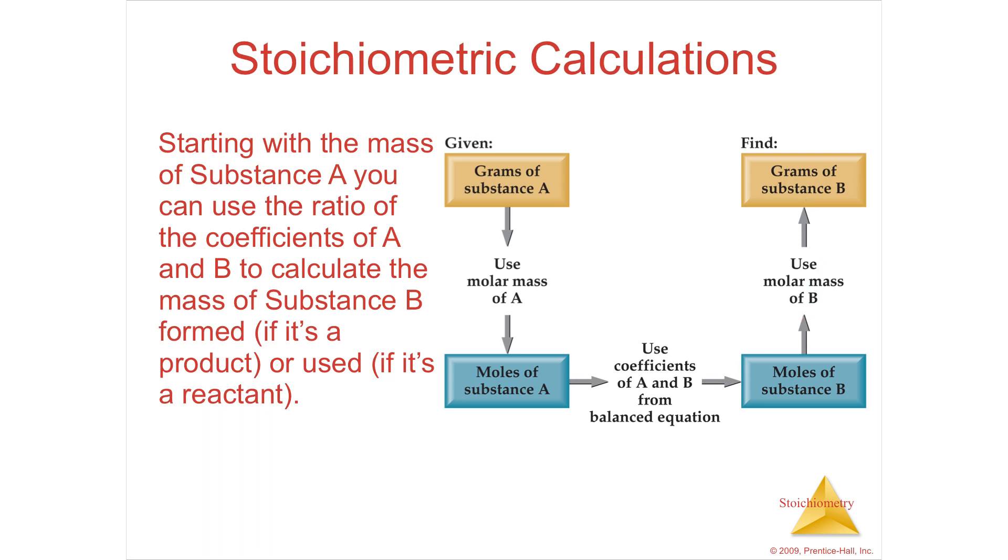That means that this is the periodic table, and so is this. This is the periodic table. This is the balanced equation. Grams substance of A through the periodic table divided by the molar mass, moles of A relationship through the balanced equation to find moles of whatever else you're looking for, then back through the periodic table to find grams.